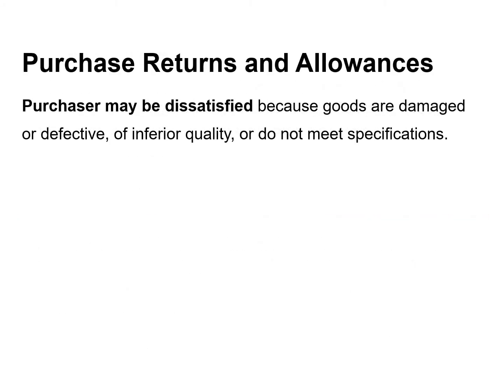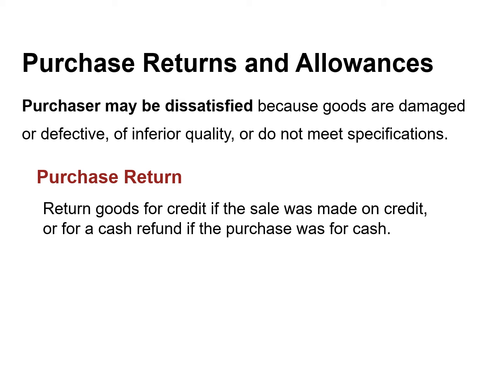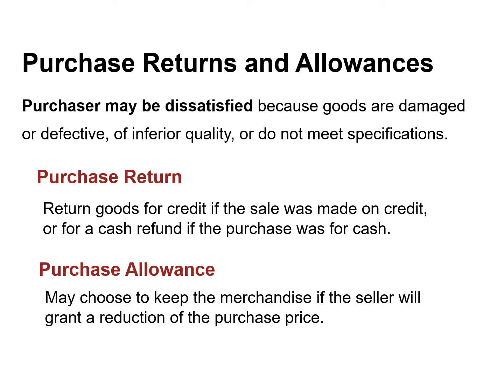A purchaser may be dissatisfied because the goods are damaged or defective, they may be of inferior quality, or they simply do not meet the purchaser's specifications. In these cases, the purchaser may return the goods to the seller for credit if the sale was made on credit, or for a cash refund if the purchase was for cash. This transaction is known as a purchase return. Alternatively, the purchaser may choose to keep the merchandise if the seller is willing to grant a reduction of the purchase price. This transaction is known as a purchase allowance.